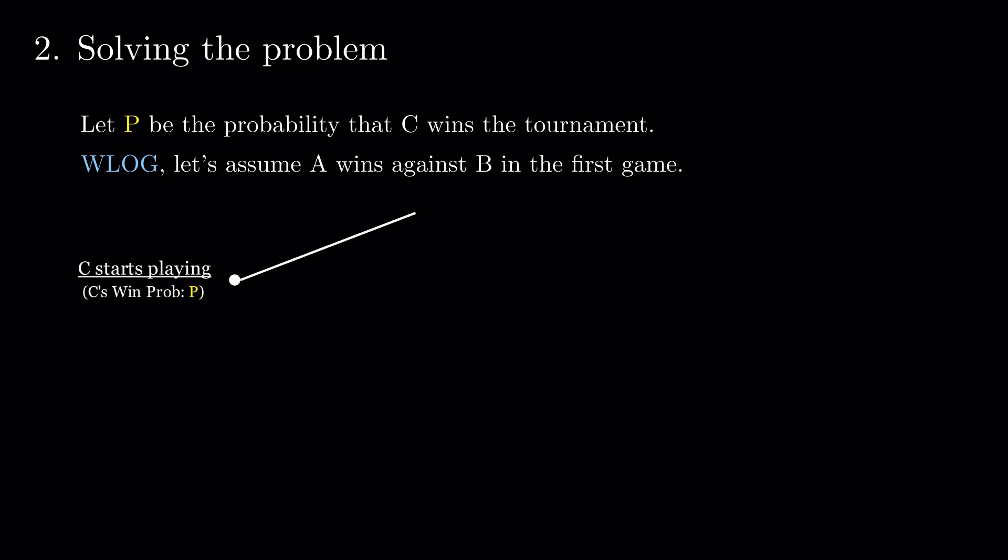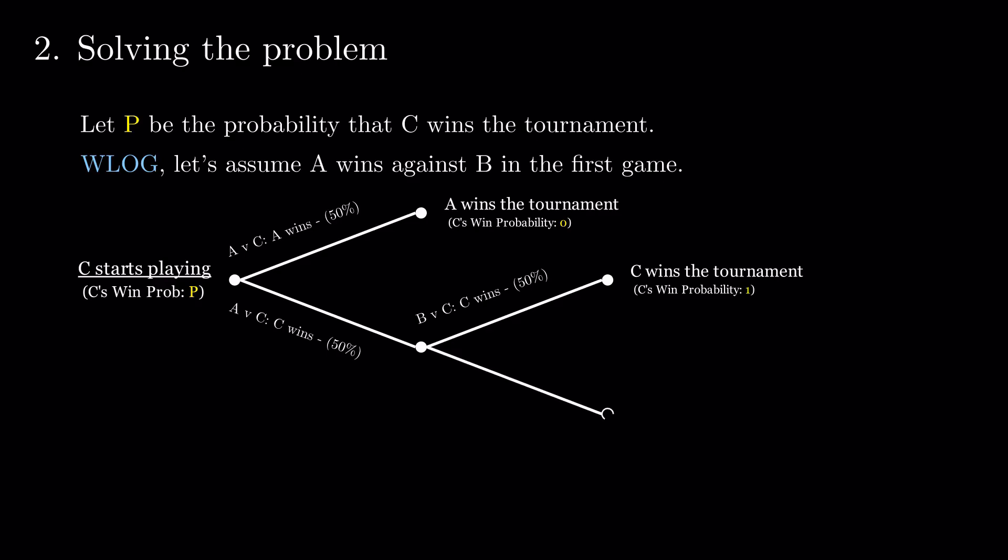With the probability of half, A wins, thus winning the entire tournament. With the probability of half, C wins. From this point, he can win the next game and thus the tournament. Or, he can lose the next one.